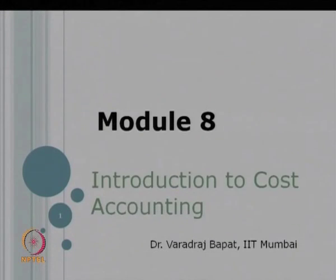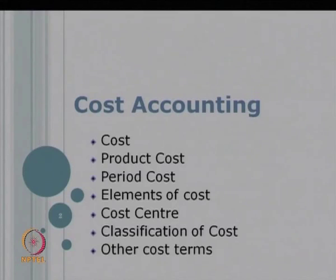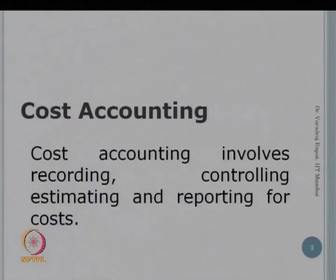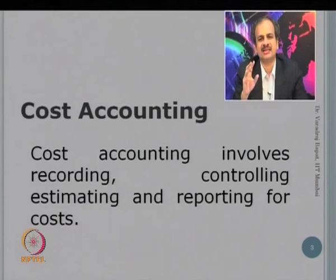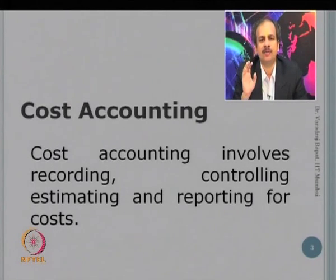Today we will look at what is exactly cost accounting, its scope, and the advantages of cost accounting. We will also discuss various types of costs, cost categories, cost centers, and so on. Cost accounting basically has three parts — it involves recording, controlling, estimating, and reporting for costs.